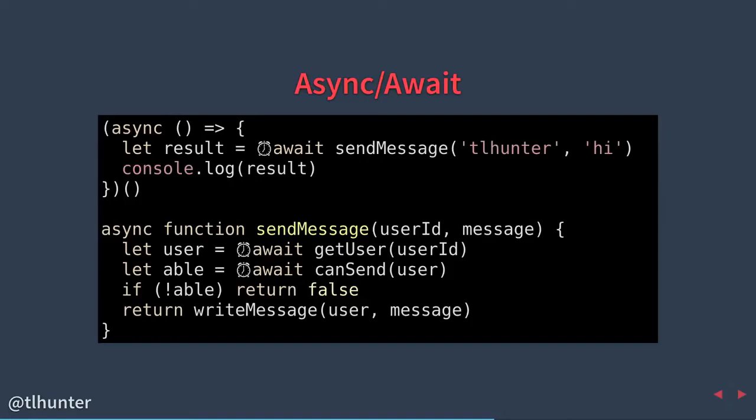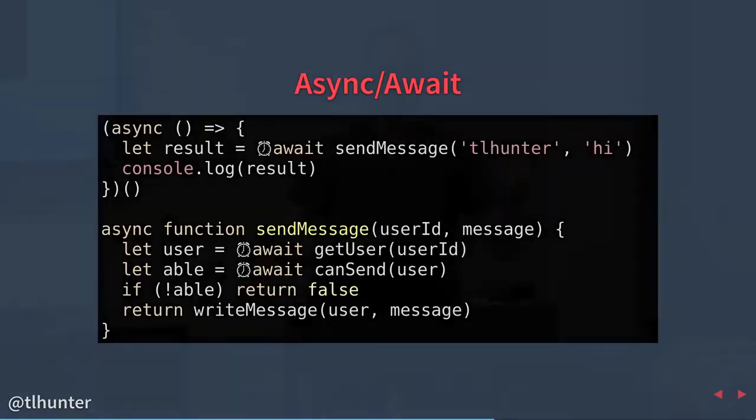For example, if you wanted an Express request handler to be an async function, you're already giving it a function to call when a request executes — that function is the one you'd give the async keyword to. So this async IIFE only really matters with REPL-type code.